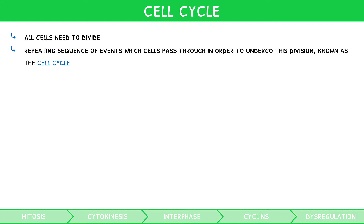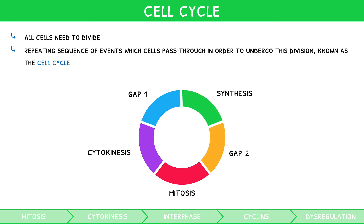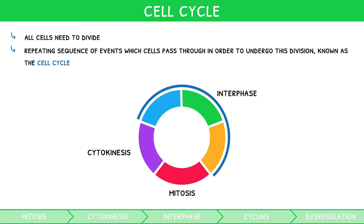The cell cycle consists of five key stages: mitosis, cytokinesis, gap 1, synthesis, and gap 2. It is worth noting that gap 1, synthesis, and gap 2 are often referred to under the umbrella term of interphase. One could theoretically start at any point in the cycle to explain the processes, but we will start with mitosis.